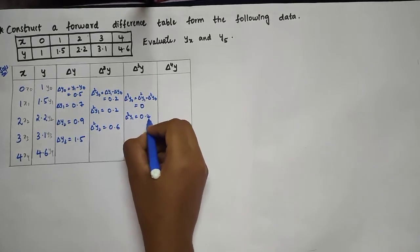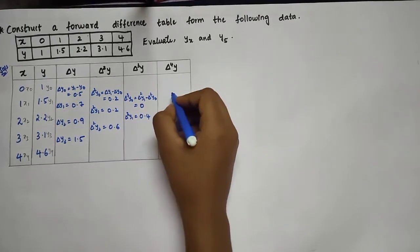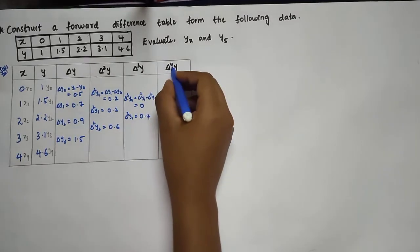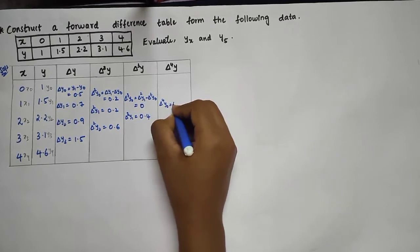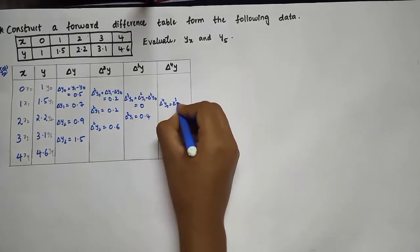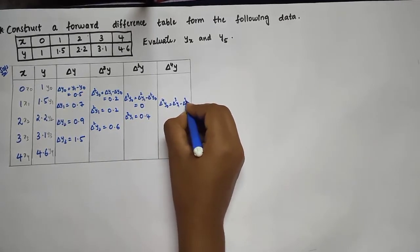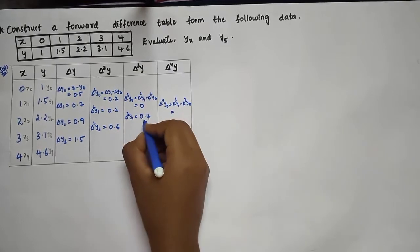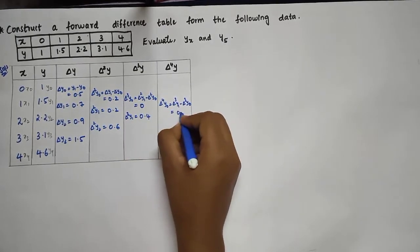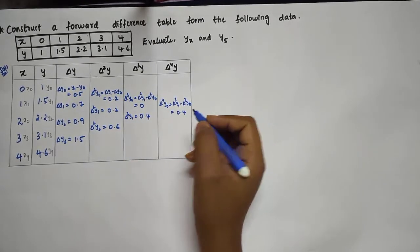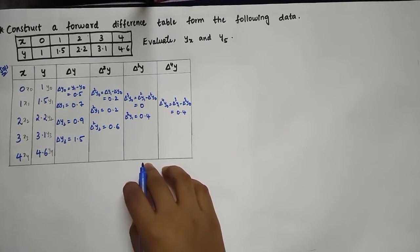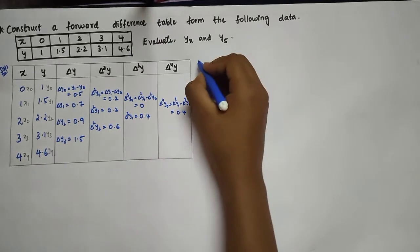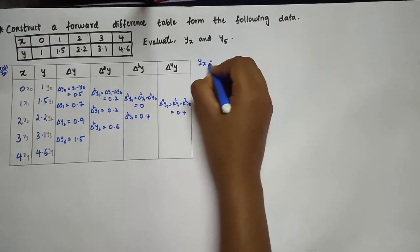Now the fourth difference: Δ⁴y₀ = Δ³y₁ − Δ³y₀ = 0.4 − 0 = 0.4. This completes the forward difference table. Now, using the Newton's forward interpolation formula, we write the expression for y(x).